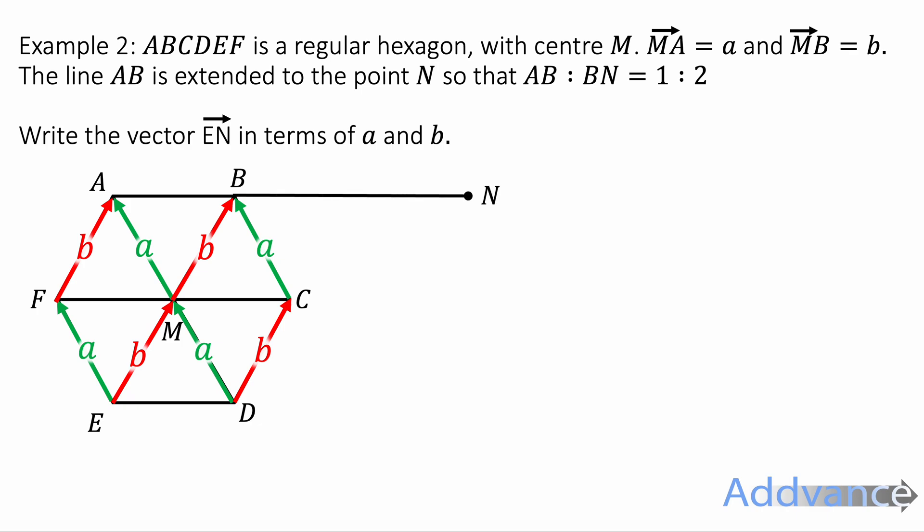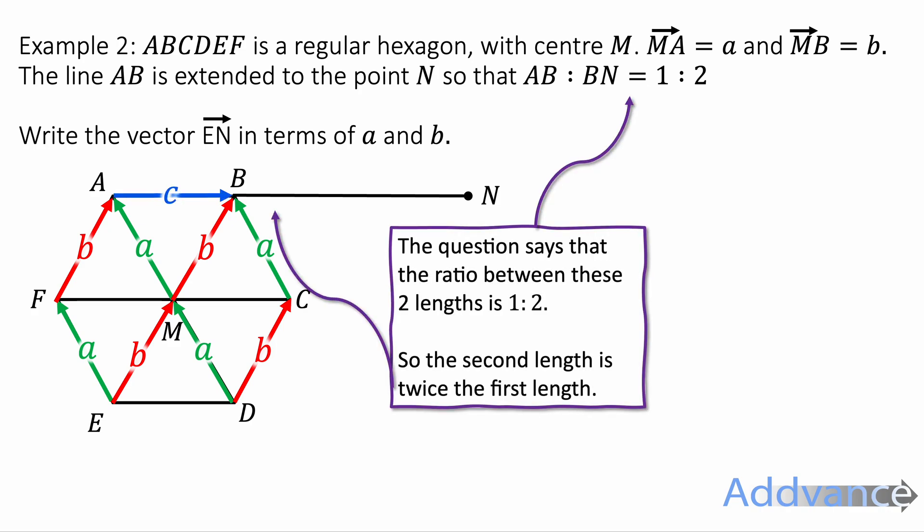We can also extend the line AB and it's extended to the point N. So the length BN is twice the length AB. We will take our ruler out and we will draw this line, this extended line. We'll call the vector AB c and we know that the vector BN is twice that. So we can label this c and this c.